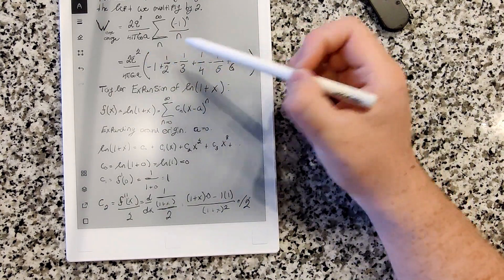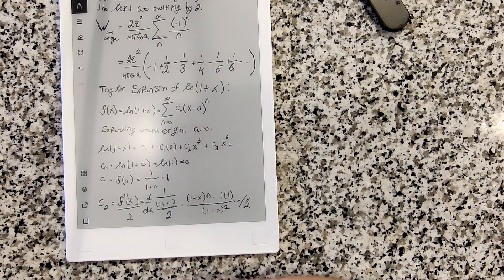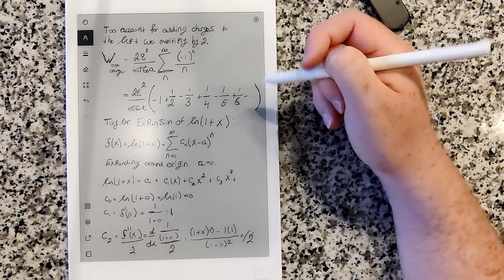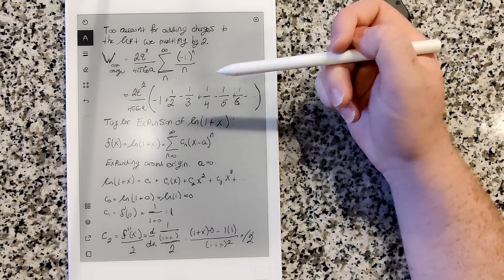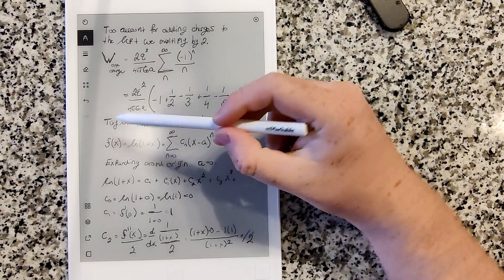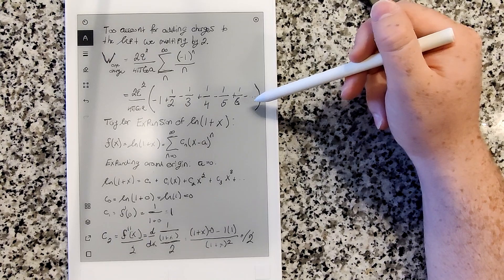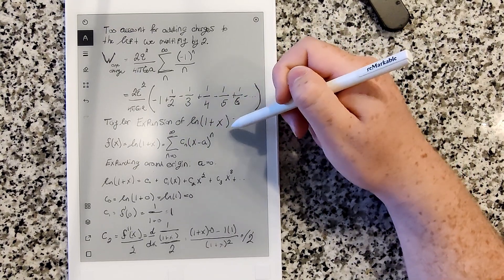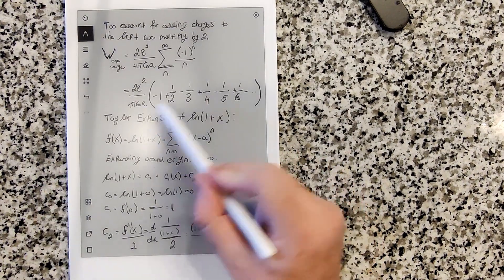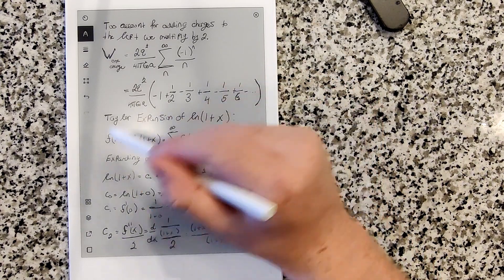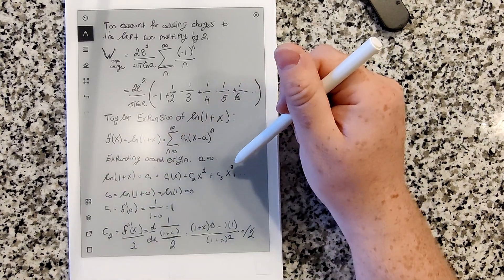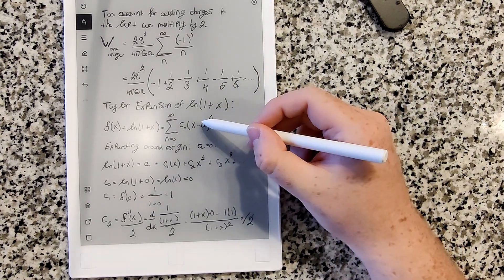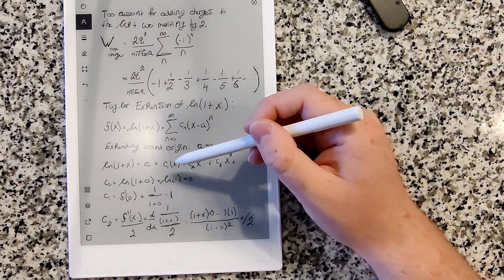So that's the work per particle to assemble this kind of system. To figure out what the constant alpha is — this is where Taylor series come in handy. This infinite summation is essentially the Taylor series of a function, specifically the Taylor series of the natural log of (1+x), expanded around the origin (a Maclaurin series).